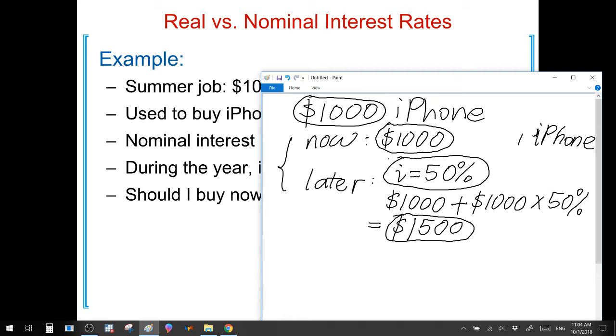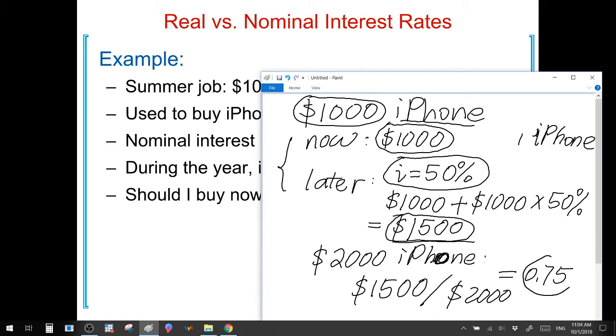However, this reasoning is only valid if the price of iPhone remains fixed over time. If over the course of one year, the price of iPhone increased from $1,000 to $2,000 at the end of the year, then with $1,500 of saving, you can only buy three quarters of an iPhone, which is less than the one iPhone you can purchase if you spend your money right away.